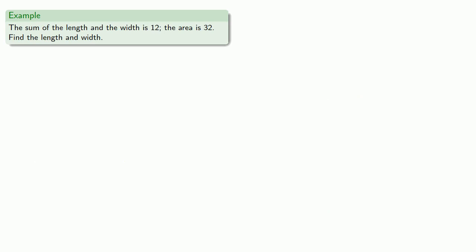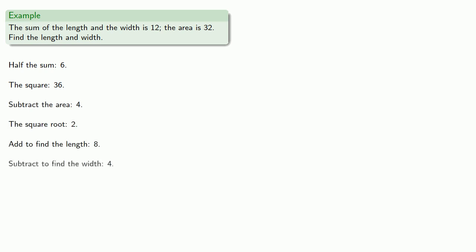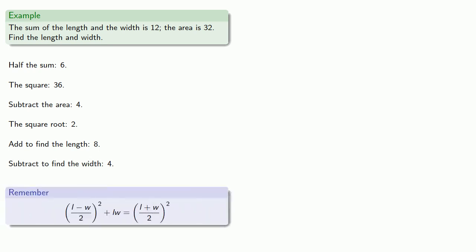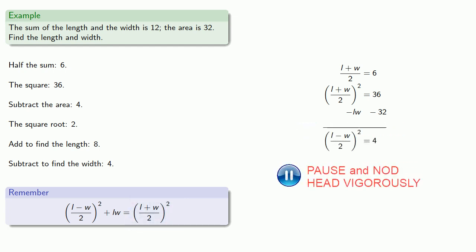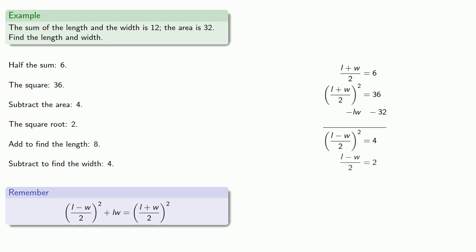For a similar problem, we have the sum of length and width and we have the area. So again: half the sum squared — this time we'll subtract the area, find the square root, add to find the length, subtract to find the width. From our modern algebraic perspective, we have the sum, so half of that gets us 6. Squaring. Since we have the sum of length and width, we want to subtract the area, which will give us the square of half the difference. So we can find half the difference directly — if we add, we get the length, and if we subtract, we get the width.